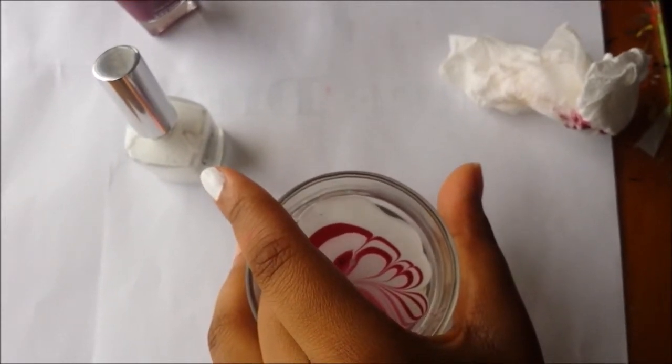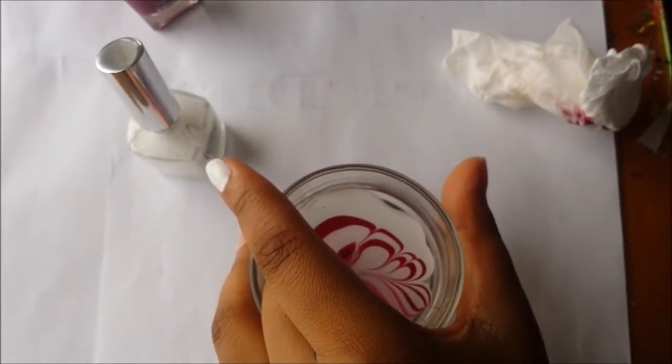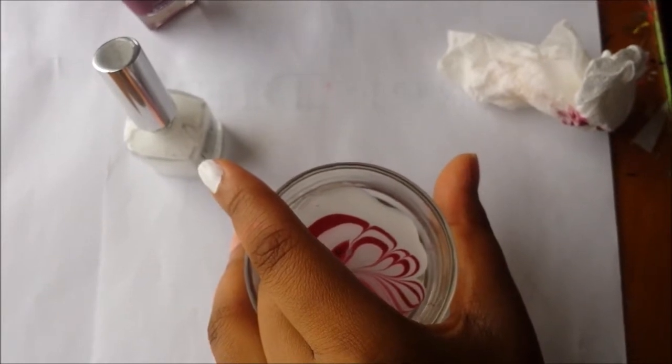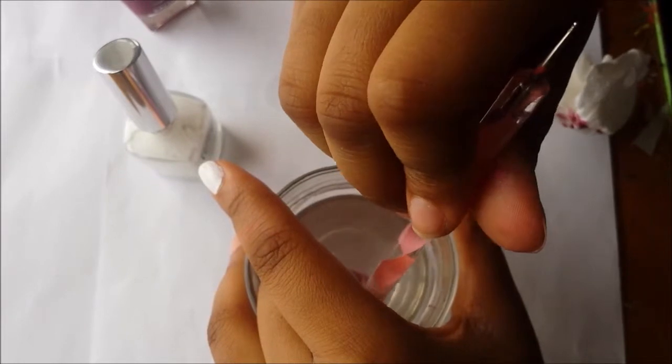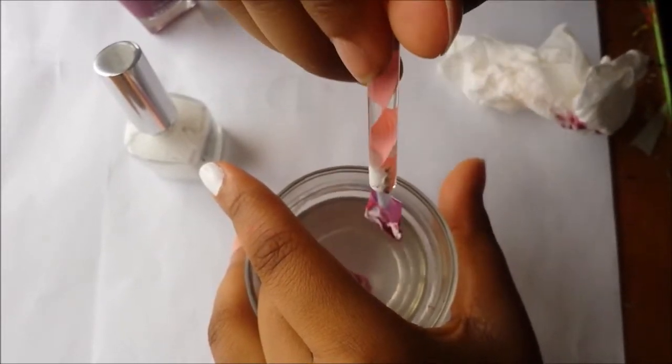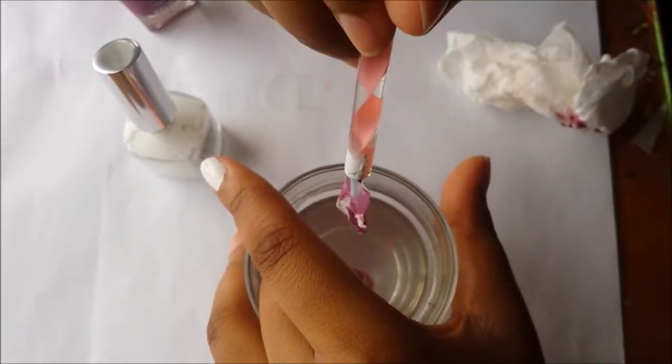Then lightly blow over the water and get a dotting tool or any other object like a pencil to collect all the residue that's left on top of the water. When you're finished, then pull out your nail and see your design.